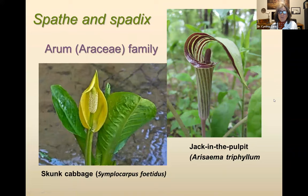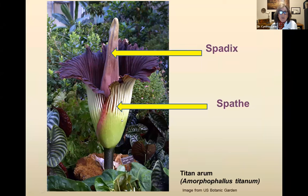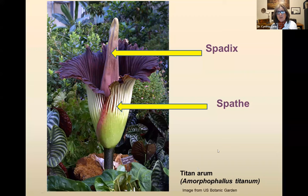A really cool kind of inflorescence arrangement is the spathe and spadix, associated with the Arum or Araceae family — jack-in-the-pulpit, skunk cabbage. You look at it and think that's a flower, and it is, but actually it's an inflorescence — clusters of teeny little flowers. The spathe is the big wraparound part, and the spadix is the central column with all the small flowers on it. This plant, Titan Arum, is one of the largest inflorescences in the world — it can get four or five feet tall — huge and amazing, and they smell terrible.